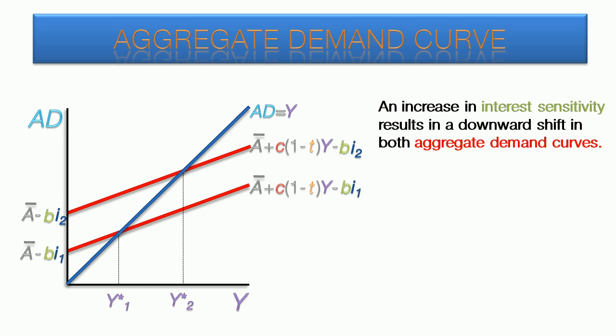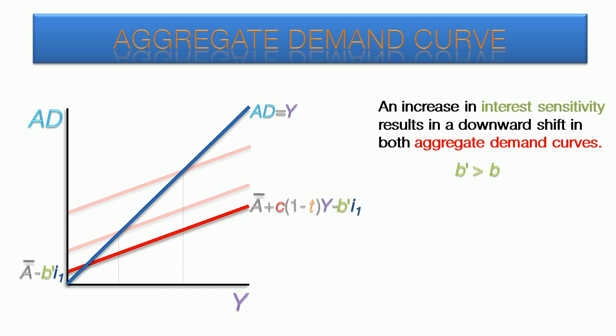An increase in interest sensitivity results in a downward shift in both aggregate demand curves. The downward shift is more pronounced for the curve with a higher interest rate, I-1. This means the distance between the two resulting equilibrium levels of income is larger.